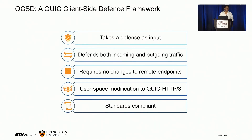This leads to our work, QCSD. QCSD is a defense framework that takes as input an existing website fingerprinting defense from the literature, and uses instructions from these defenses to shape traffic both going from the client to the server as well as from the server to the client. It does this without requiring any changes to the server and without requiring the deployment of anything new in the network. Furthermore, it is a user space modification to a QUIC/HTTP3 library, and so it can be deployed on a per-application basis with the modifications bundled with the application. Finally, as a standards-compliant modification to the QUIC/HTTP3 library, it is already compatible with existing web servers.